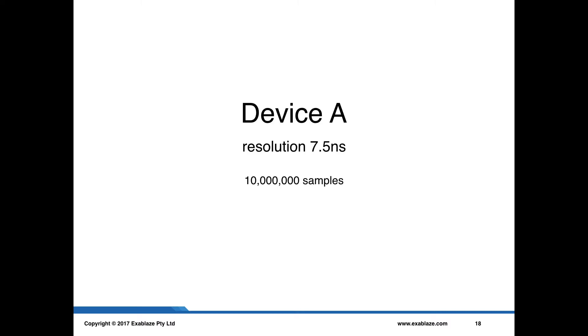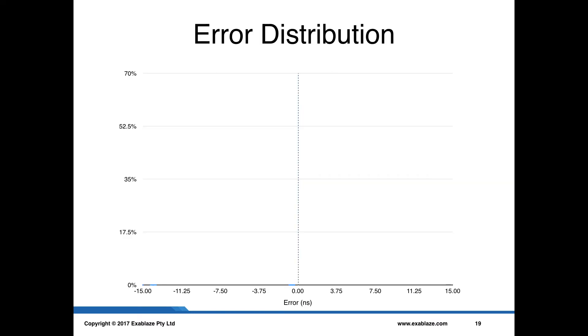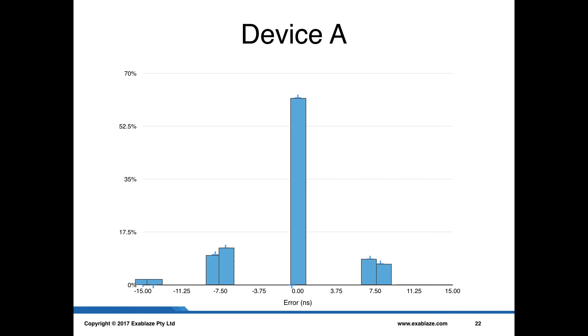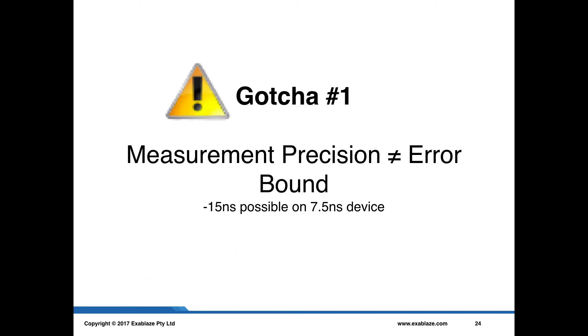So, what I've done here is take device A, it has a resolution of 7.5 nanoseconds, and I've put 10 million samples through just that sort of setup. As I go through, I'm going to report my errors using an error distribution with the error or the value reported by the capture device on the x-axis, and the number of samples that had that value on the y-axis. Getting closer to zero is better, and getting more samples at zero is better. With device A, you can see this curve has some interesting features. We have a value right down there at negative 15 nanoseconds. Remember that this was a 7.5 nanosecond resolution device, and the first gotcha here to be aware of is that the measurement precision or resolution is not always equal to the error bound, or the accuracy. So, it is possible to get a negative 15 nanosecond value out of a 7.5 nanosecond resolution device.